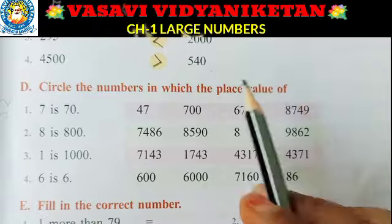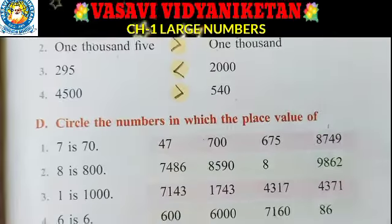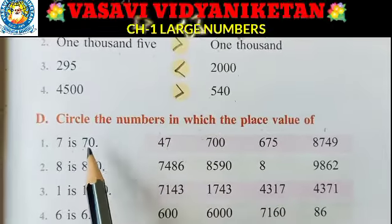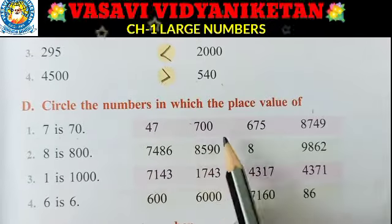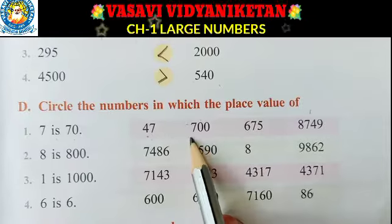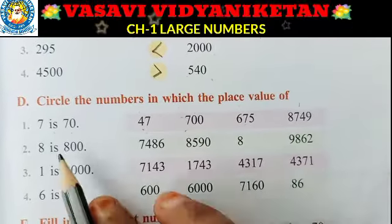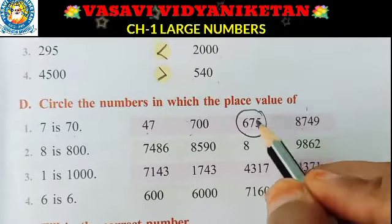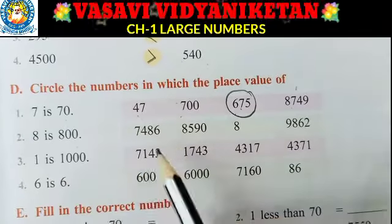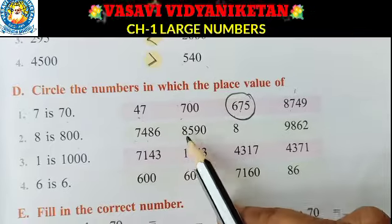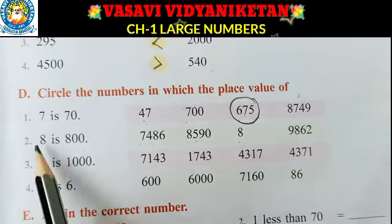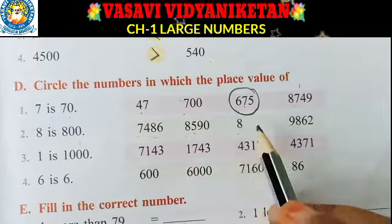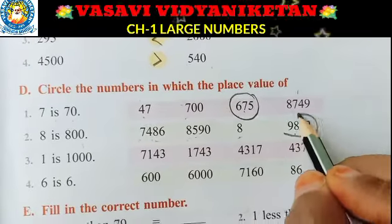Next, circle the numbers in which the place value of 7 is 70 Nana. So in which number is 7 in the 10's place? Here 7 is in the 1's place, here 7 is in the 100's place, here 7 is in the 10's place, here also 10's place, and here also 100's place. So 675 is the answer — because here 7 is in the 10's place, so its place value is 70. Next, circle where 8 is 800 Nana: 7,486 and 8,598 — so which one has 8 in the 100's place? The answer is 9,862.